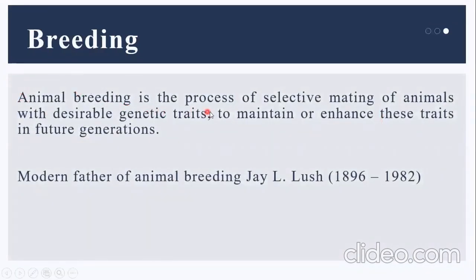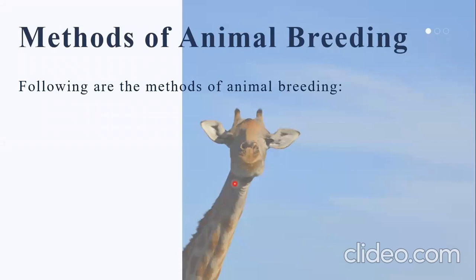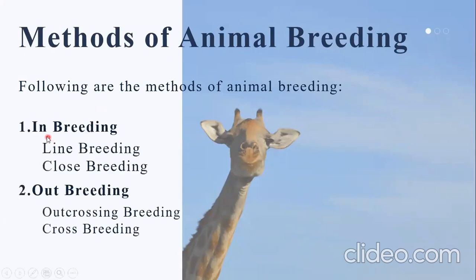Animal breeding is the process of selective mating of animals with desirable genetic traits to maintain or enhance these traits in future generations. JL Lash is known as the modern father of animal biotechnology. The methods of animal breeding include inbreeding, which is further divided into line breeding and close breeding, and outbreeding, which is further divided into outcrossing and crossbreeding.